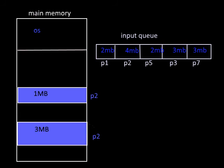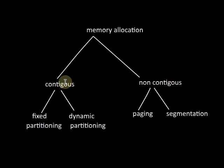For contiguous memory allocation we can use two techniques: either fixed partitioning scheme or dynamic partitioning scheme. And non-contiguous memory allocation can be either paging or segmentation.